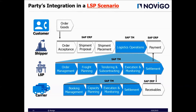The logistics operations are done in SAP TM. The LSP performs all logistics operations: order management, freight planning, tendering and subcontracting, execution and monitoring, and settlement. At the end, we have the carrier with its own set of activities. After the LSP performs tendering and subcontracting, the carrier starts its tasks: booking management, capacity planning, execution and monitoring, and settlement.